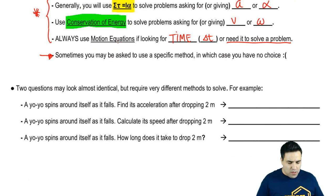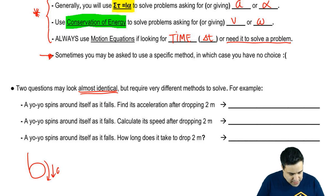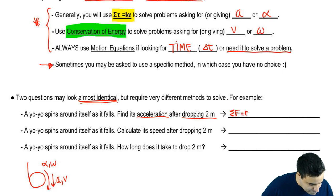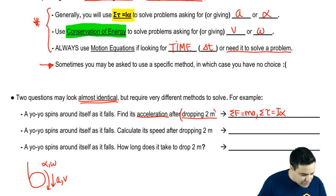So I want to do a quick example here of how questions may look almost identical, but require different methods to solve. So a yo-yo spins around itself as it falls. Something like this. The yo-yo is falling and spinning at the same time. So find its acceleration after dropping two meters. We cannot use conservation of energy to find acceleration. If you look at the conservation of energy equation, there's no a in there, right? So we would have to use, to find acceleration, a combination of F=ma, torque equals I alpha. Okay? The fact that it drops two meters doesn't matter, right? The acceleration is constant throughout. This is just extra information.